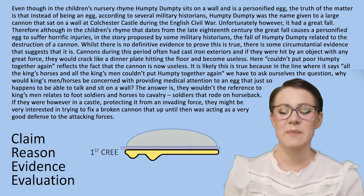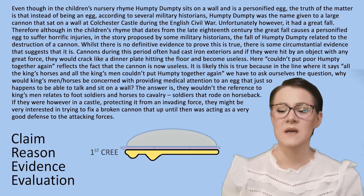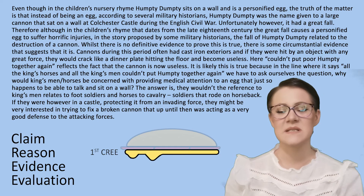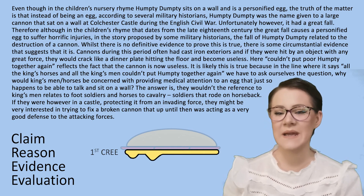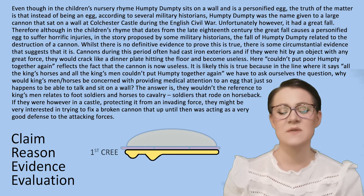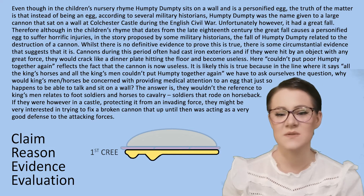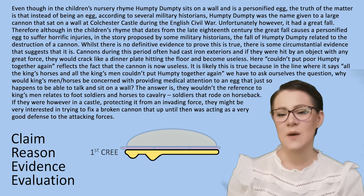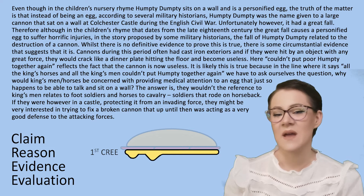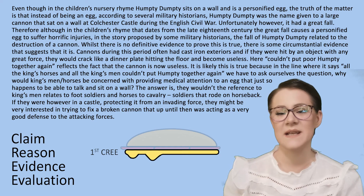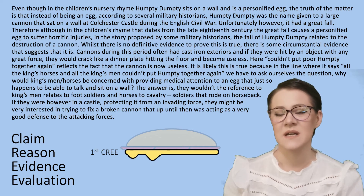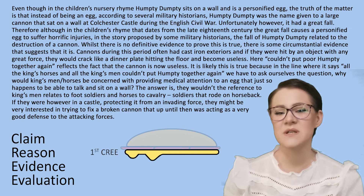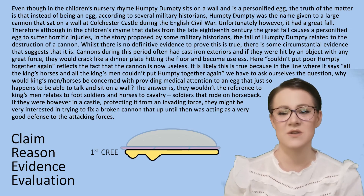Moving on to our first CREE paragraph, I have written: 'Even though in the children's nursery rhyme Humpty Dumpty sits on a wall and is a personified egg, the truth of the matter is that instead of being an egg, according to several military historians, Humpty Dumpty was the name given to a large cannon that sat on a wall of Colchester Castle during the English Civil War. Unfortunately, however, it had a great fall. Therefore, although in the children's rhyme that dates from the late 18th century the great fall causes a personified egg to suffer horrific injuries, in the story proposed by some military historians, the fall of Humpty Dumpty related to the destruction of the cannon.'